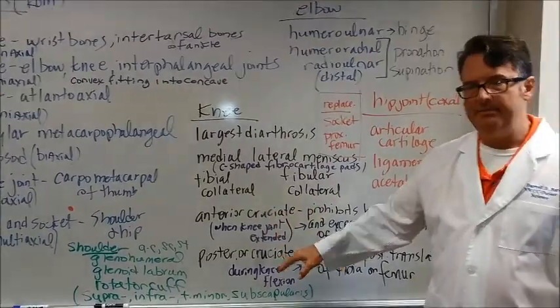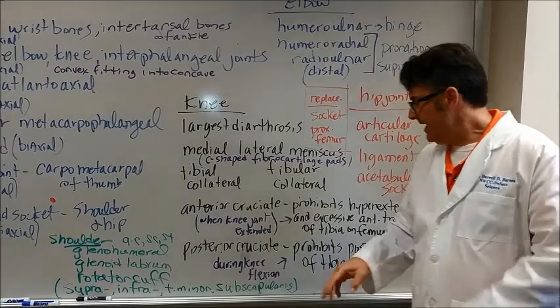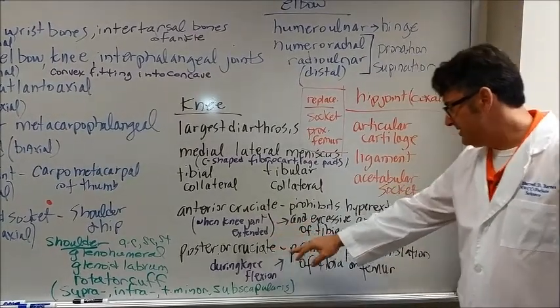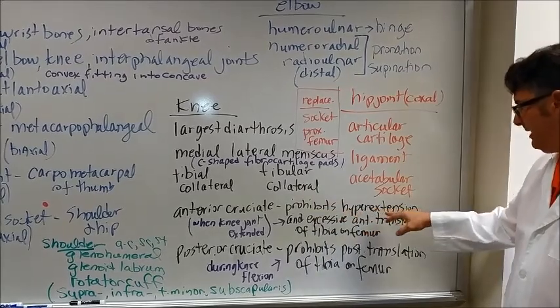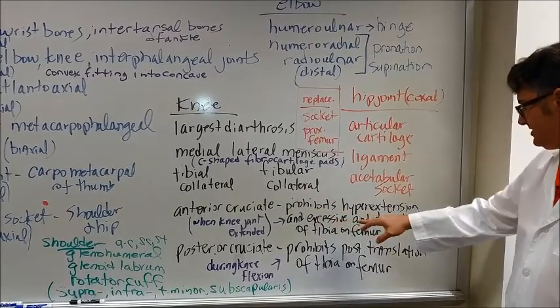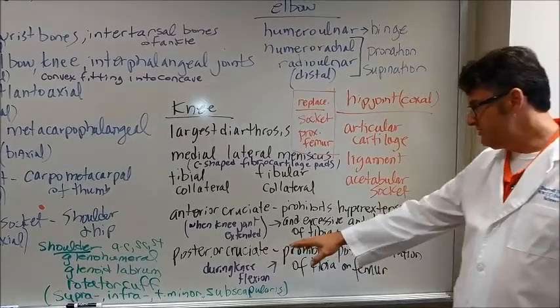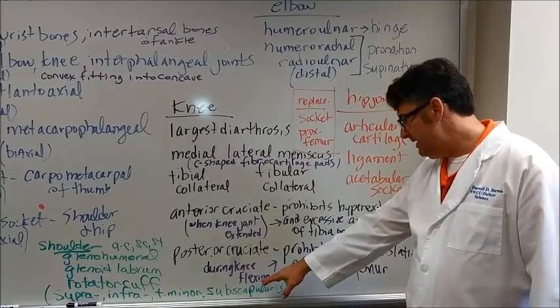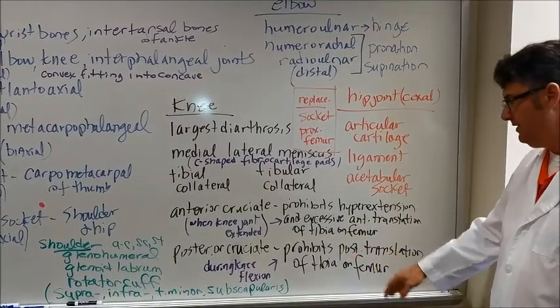The anterior and the posterior cruciate ligaments are on the inside of the knee. When the knee joint is extended, the anterior cruciate prohibits hyperextension and excessive anterior translation of the tibia on the femur. The posterior cruciate in knee flexion prohibits posterior translation of the tibia on the femur.